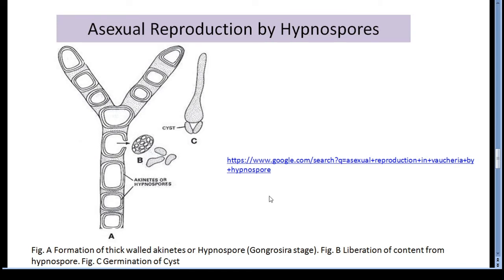Asexual reproduction by hypnospore: in terrestrial species, segmentation takes place in the tubular branch forming many small compartments. Around the protoplast of each segment, a thick wall develops and they are called hypnospores. The hypnospores either germinate directly producing new thalli or they divide producing thin-walled cysts. Each cyst germinates in a special way — the cysts break and a pore develops at one end. The protoplasm comes out in amoeboid fashion, becomes rounded and develops into a new thallus. This segmented thallus looks like the alga Gongrosira and this stage is known as the gongrosira stage.